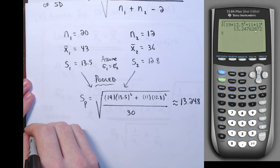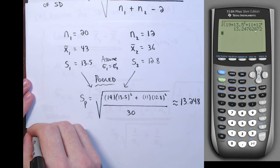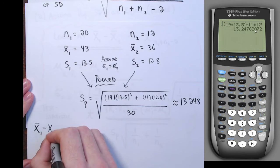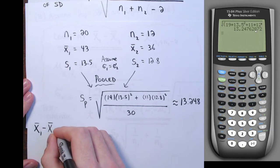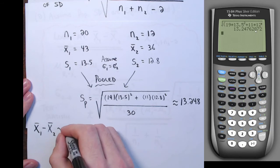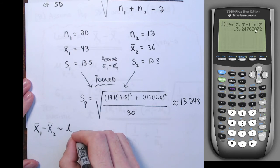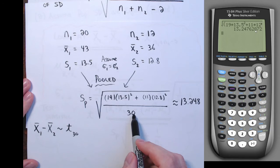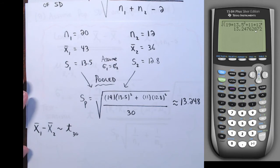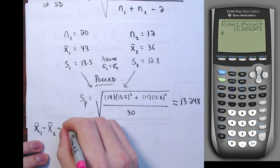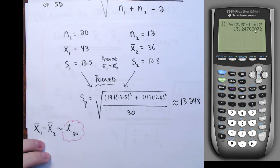The distribution of X1 bar minus X2 bar would be a Student's t-distribution with 30 degrees of freedom. That's N1 plus N2 minus 2. So that's one part of our answer — the number of degrees of freedom for the t-distribution we're going to be using in our test.